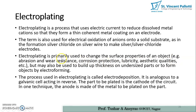The surface properties improved by electroplating include abrasion and wear resistance, corrosion protection, lubricity — meaning achieving high lubrication on the surface — and aesthetic qualities. This aesthetic quality parameter is important as we are doing electroplating for improving surface finish or surface roughness. It may also be used to build up thickness on undersized parts or to form objects by electroforming.